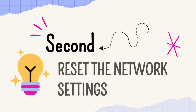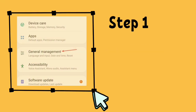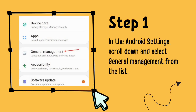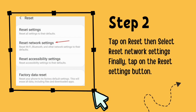Second, reset the network settings. Step 1: In the Android settings, scroll down and select General Management from the list. Step 2: Tap on Reset, then select Reset Network Settings. Finally, tap on the Reset Settings button.